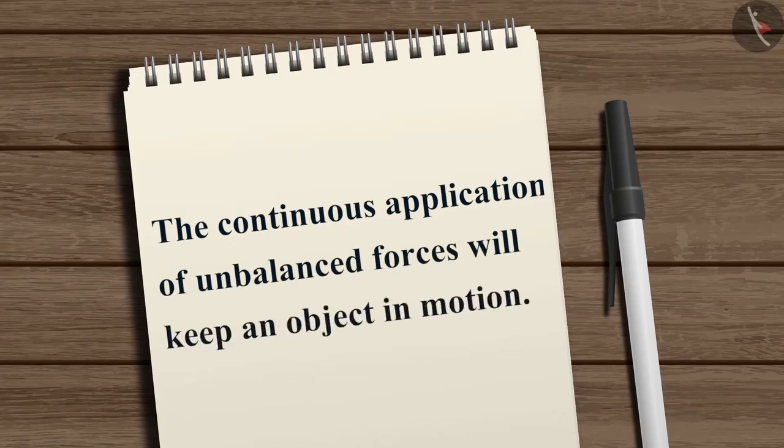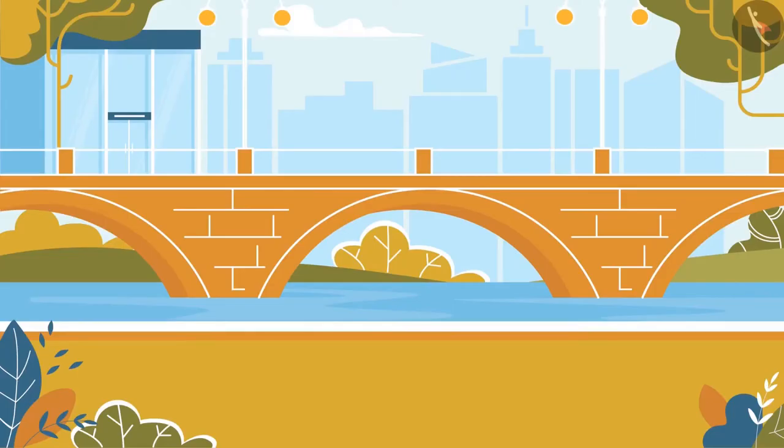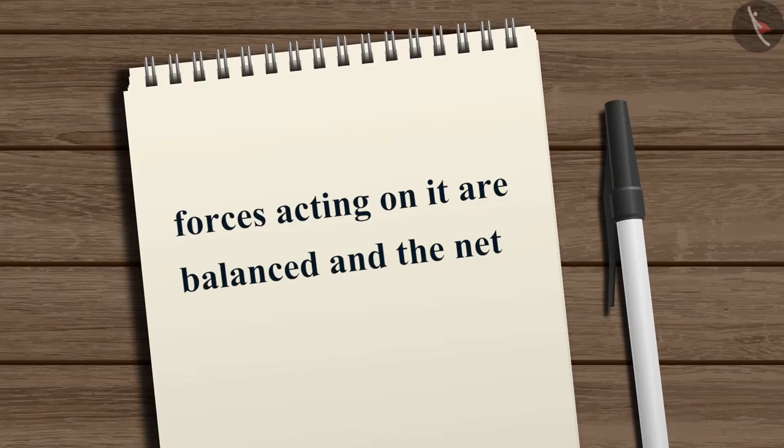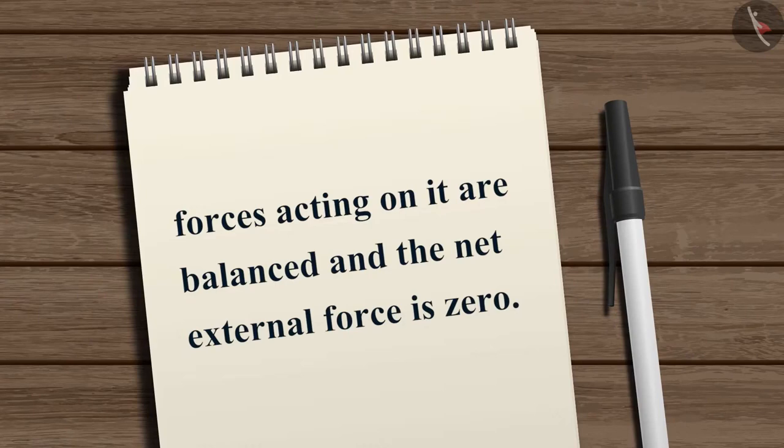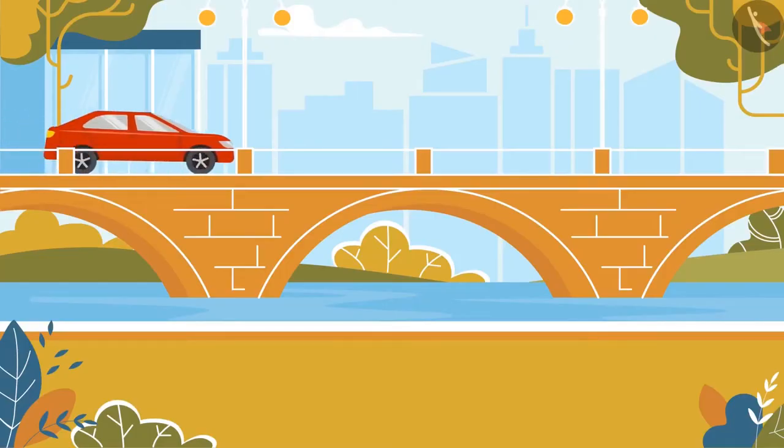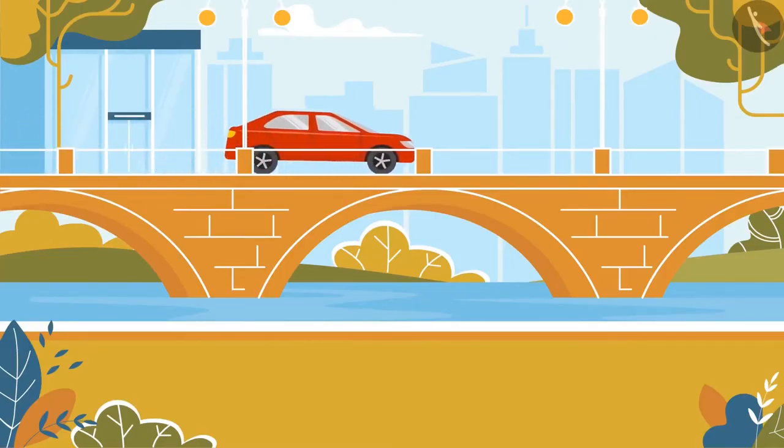However, some people get the wrong impression that the continuous application of unbalanced forces will keep an object in motion. The correct understanding would be: any object will maintain its state of rest or state of motion when all the forces acting on it are balanced and the net external force is zero, which means a change in the state of rest or state of motion is observed only when an unbalanced force is applied.